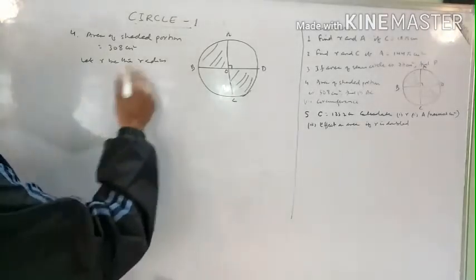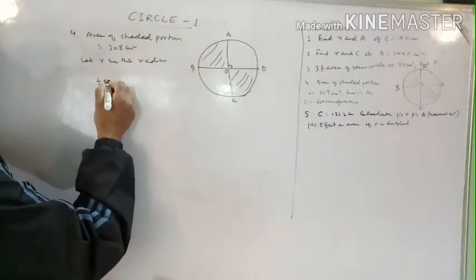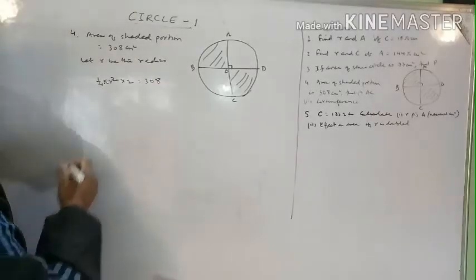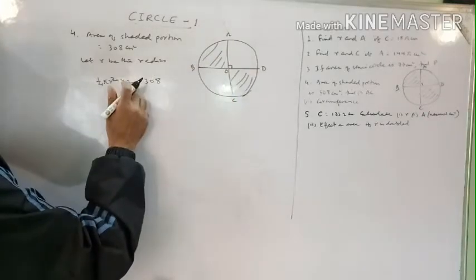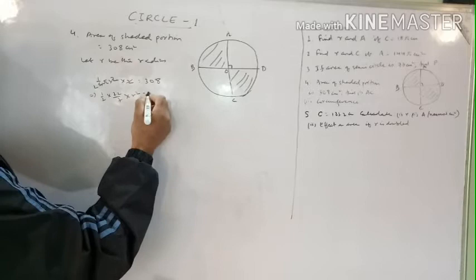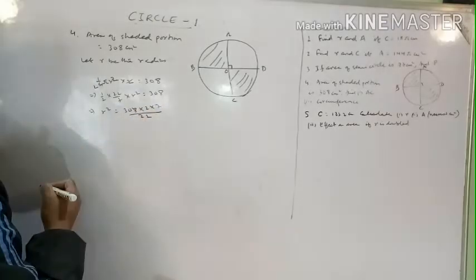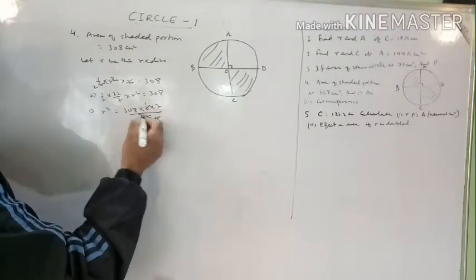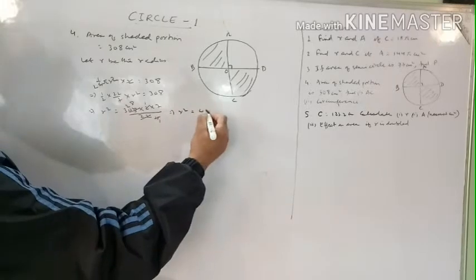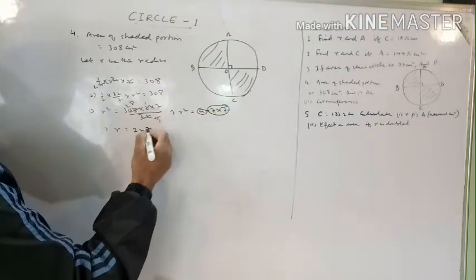Let r be the radius. The shaded area consists of two quadrants. Area of one quadrant is (1/4)πr², so area of two quadrants is (1/2)πr². Setting (1/2)(22/7)r² equal to 308 and solving: r² equals 308 times 2 times 7 divided by 22, giving r² equals 196, so r equals 14 centimeters.